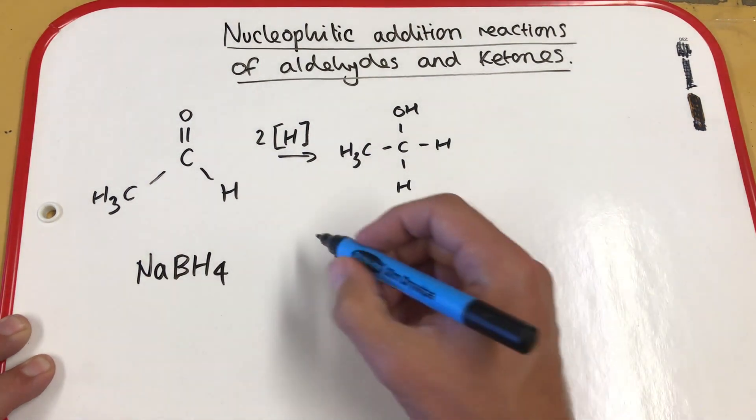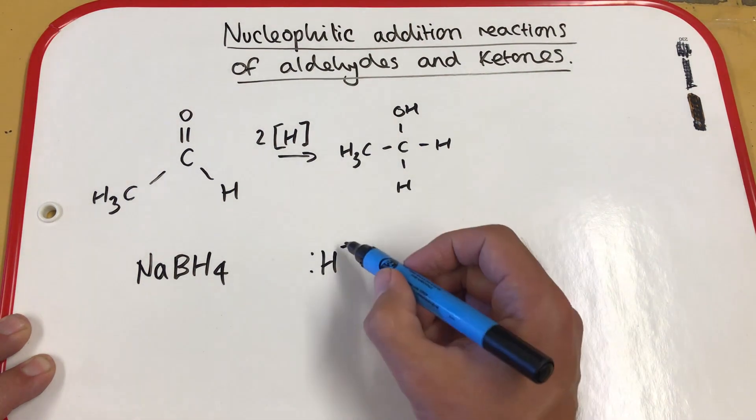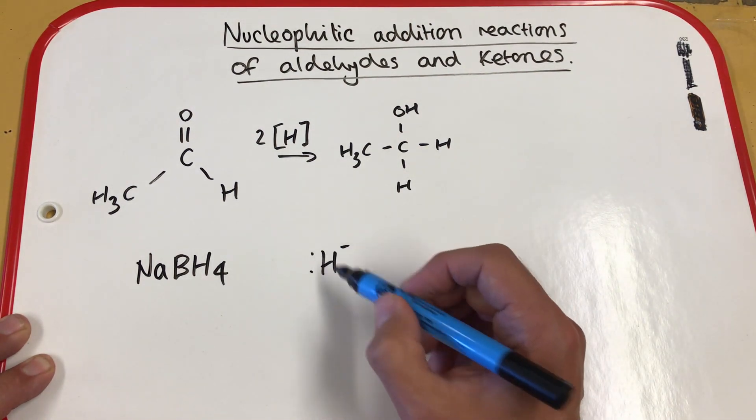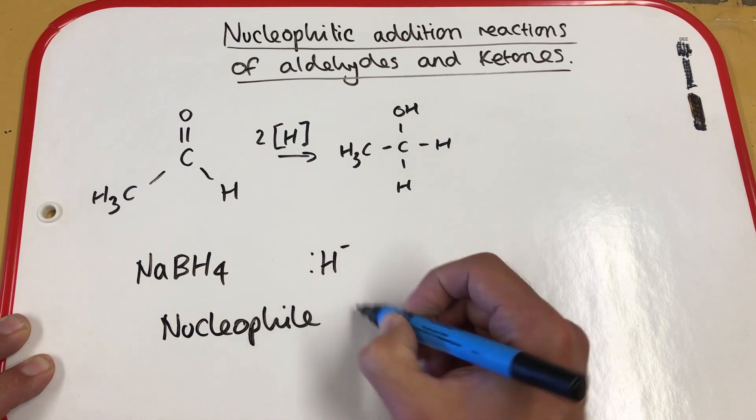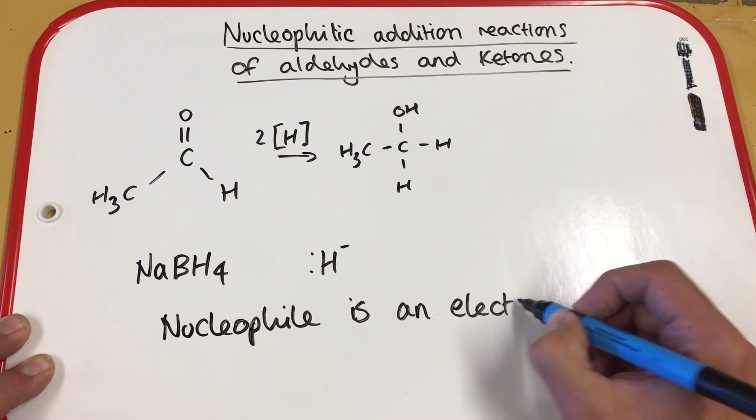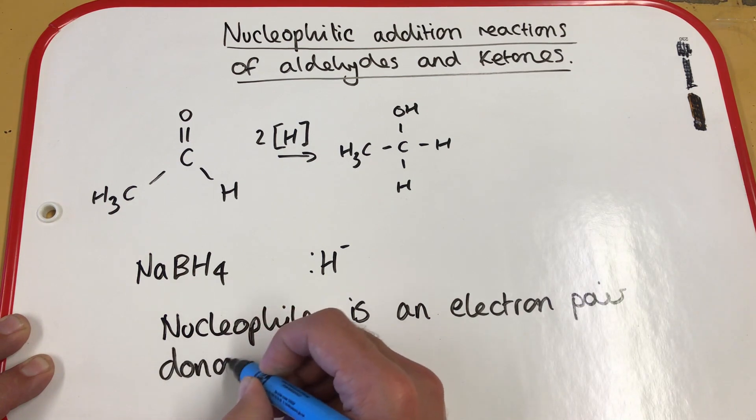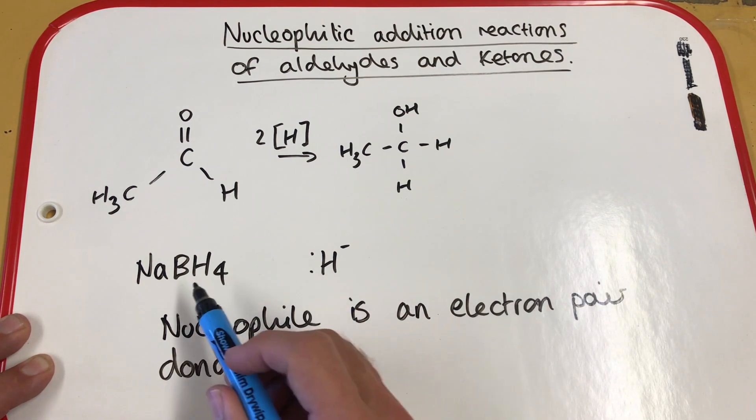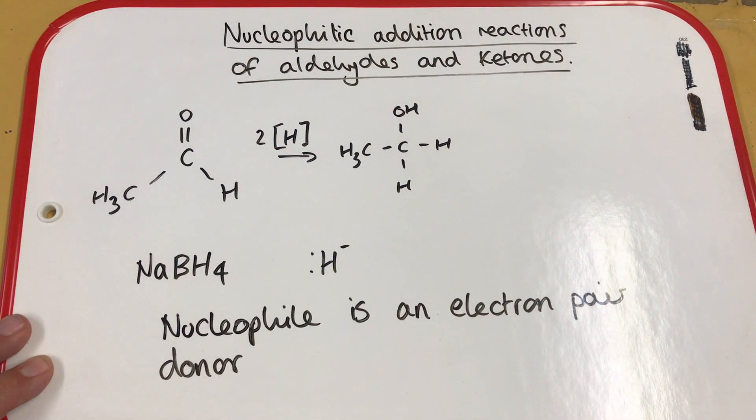Now, NABH4 is a source of hydride ions. So this is going to be our nucleophile. If we remember that a nucleophile is an electron pair donor, our nucleophile from NABH4 is going to donate a pair of electrons to the carbon on our aldehyde. So let's have a look at the mechanism that's actually involved for this.